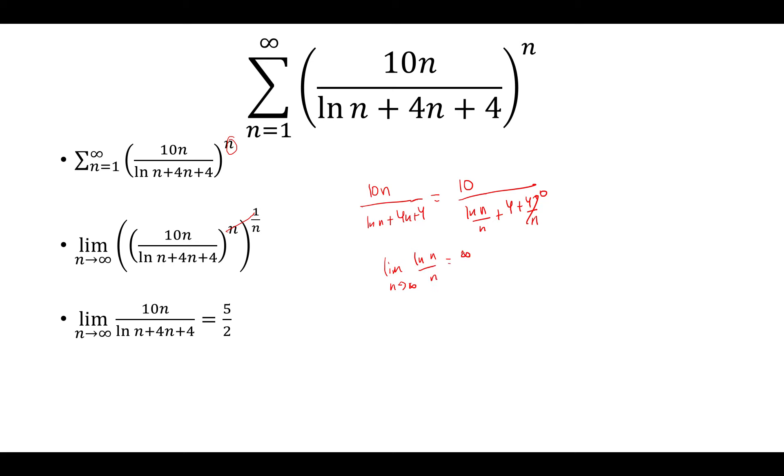So this is obviously infinity over infinity, but we take the derivative of the top and the bottom. We have 1 over n, and then the denominator is just 1. That clearly goes to 0.